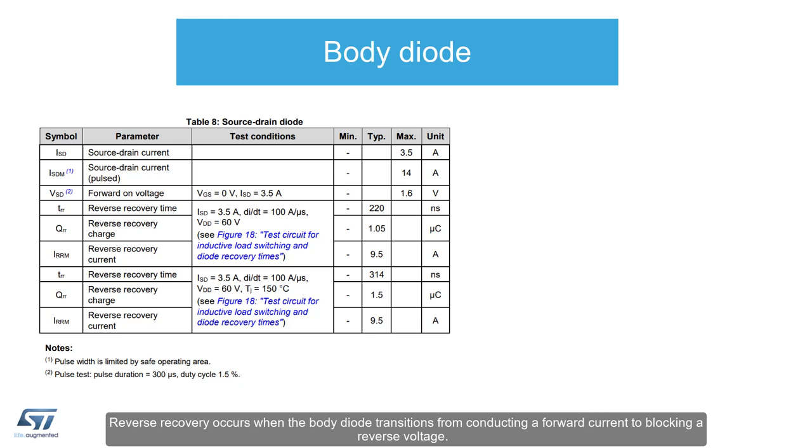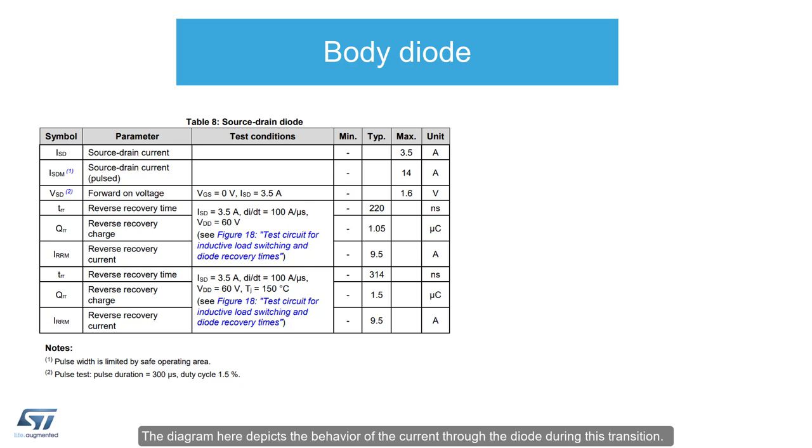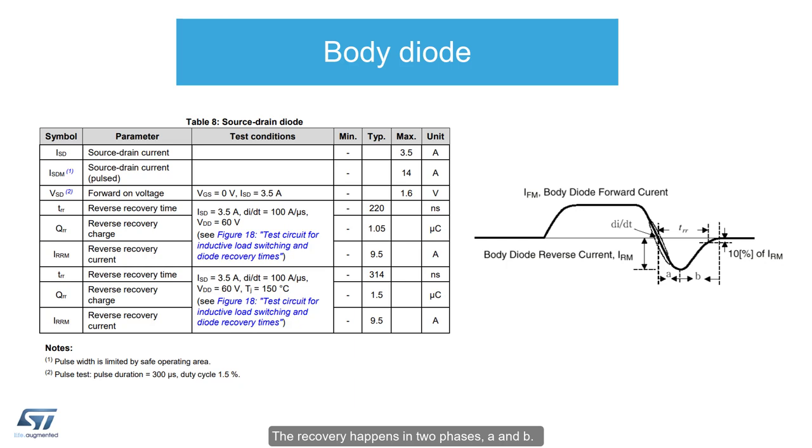Reverse recovery occurs when the body diode transitions from conducting a forward current to blocking a reverse voltage. The diagram here depicts the behavior of the current through the diode during this transition. The recovery happens in two phases, A and B.